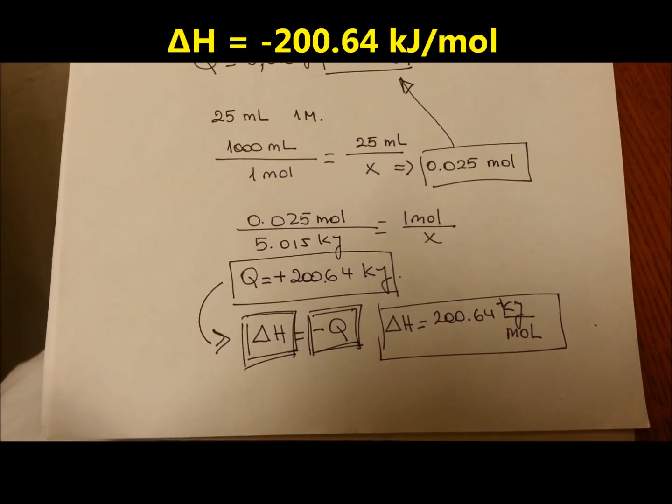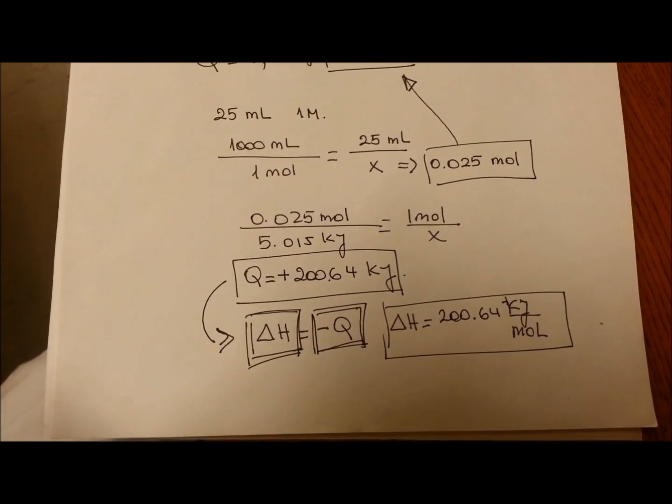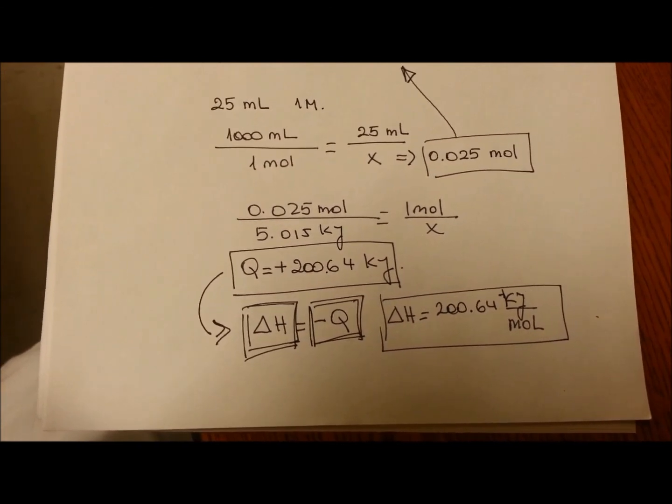The accepted value for this delta H is around -219 kilojoules per mole. So we are not so far away from the real value.